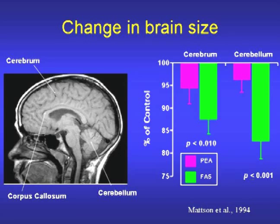The image on the left is a normal mid-sagittal MRI scan of the human brain with the cerebrum and cerebellum pointed out. The data on the right show the reduction in size of these two areas in children with FAS and PEA. The acronym PEA stands for Prenatal Exposure to Alcohol, and includes children with known histories of heavy prenatal alcohol exposure but who lack the features necessary for a diagnosis of FAS. The extent of reduction in the volume of both the cerebrum and cerebellum is significant. Other brain imaging studies indicate disproportionate size reductions in the basal ganglia, cerebellum, and corpus callosum. The data are presented as percent of normal matched controls.